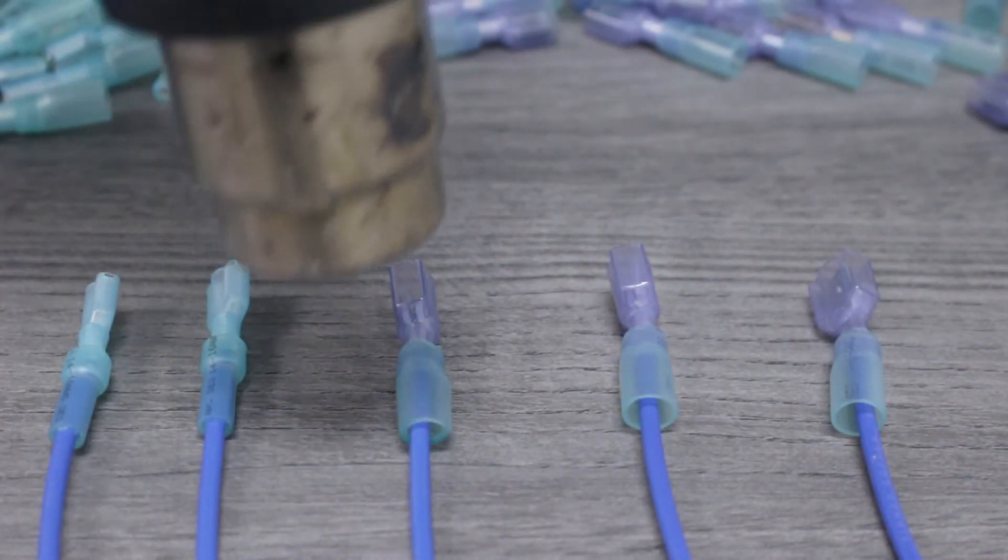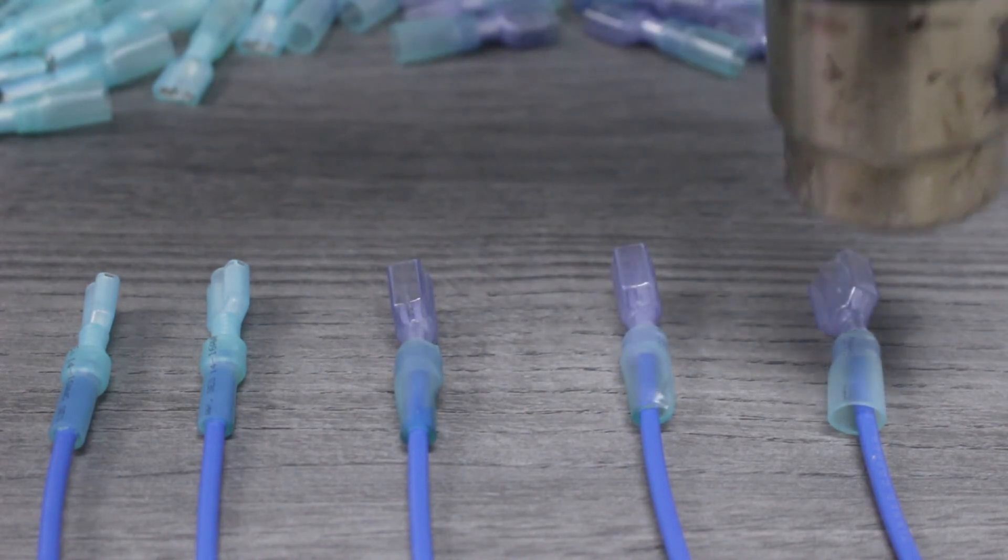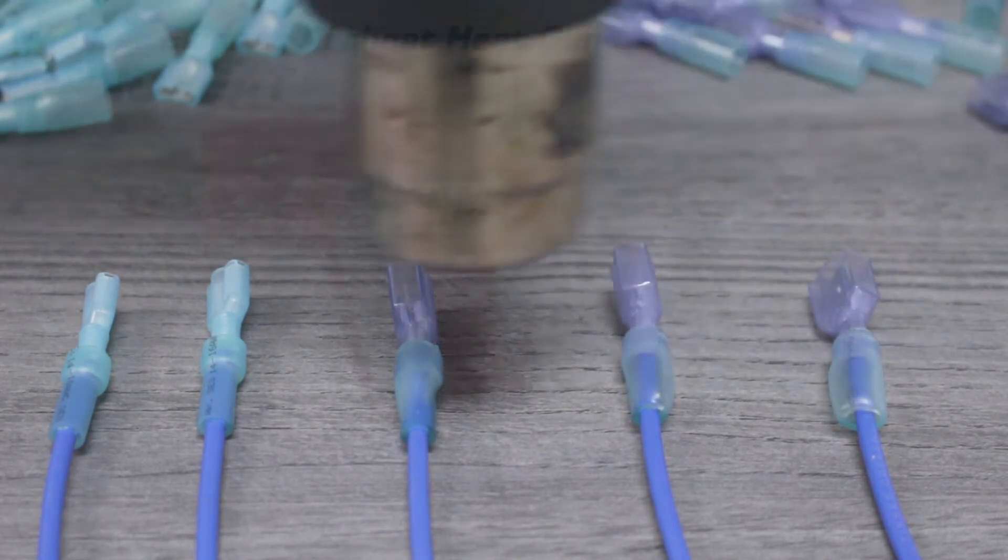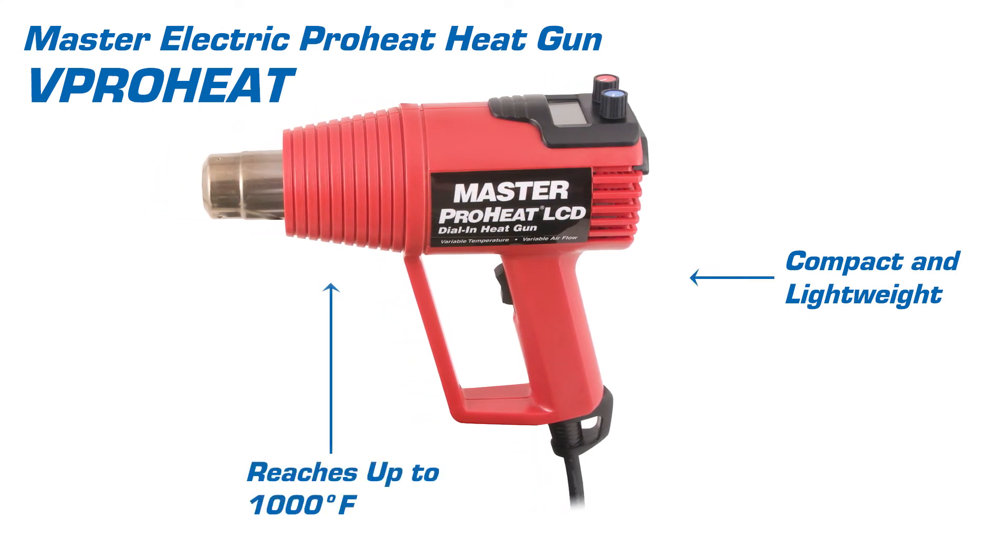With the disconnect properly installed, we'll move on to activating the heat shrink, keeping the heat gun at a safe distance and moving back and forth in a slow, consistent manner. This heat tool is compact and lightweight and can reach temperatures of up to 1000 degrees Fahrenheit.